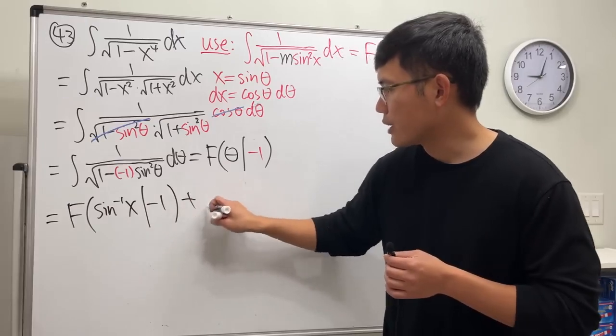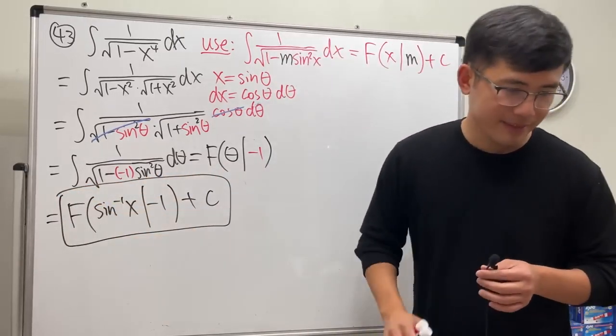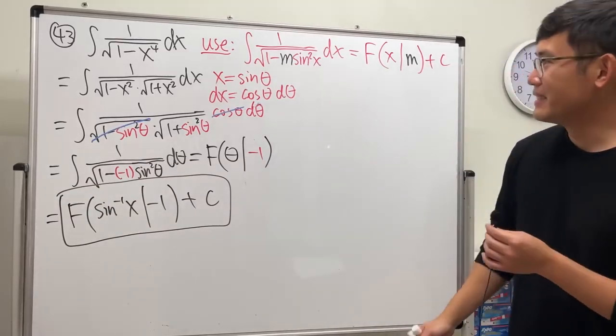Negative 1, and then we're done, plus C. Wow! Yeah, crazy stuff, huh? Isn't it? Okay.